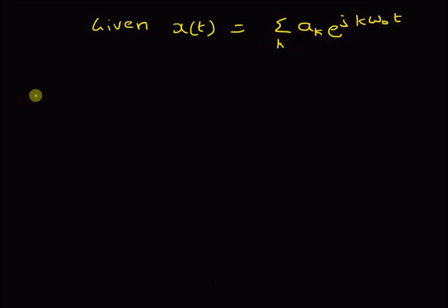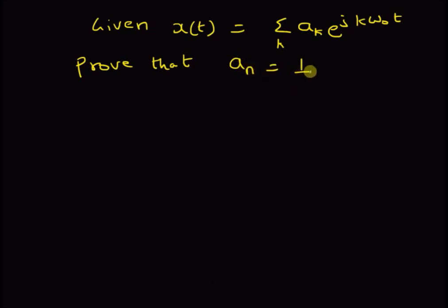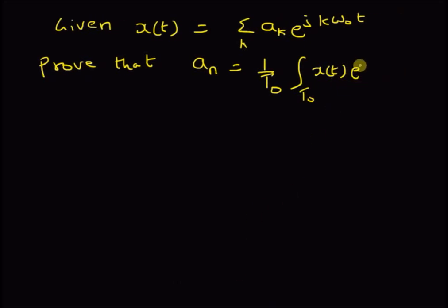Given this synthesis equation, we want to prove that the Fourier series coefficients, that is, aₖ's, can be defined as aₙ = (1/T₀) integral over the period T₀ of the periodic function x(t) multiplied by the exponential e^(-jnω₀t) dt.